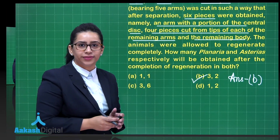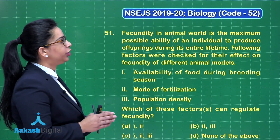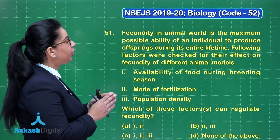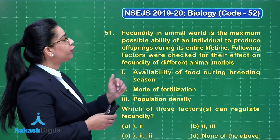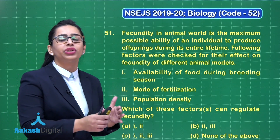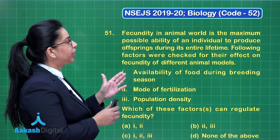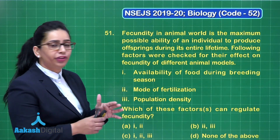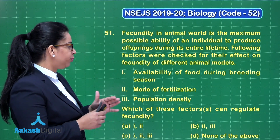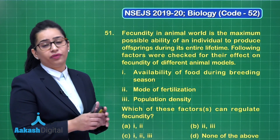Next is question number 51: fecundity in the animal world is the maximum possible ability of an individual to produce offspring during its entire lifetime. So fecundity means the maximum possible ability to produce offspring or young ones in the entire lifetime of an organism. Following factors were checked for their effect on fecundity: availability of food during breeding season, mode of fertilization, and population density. Which of these factors can regulate fecundity?